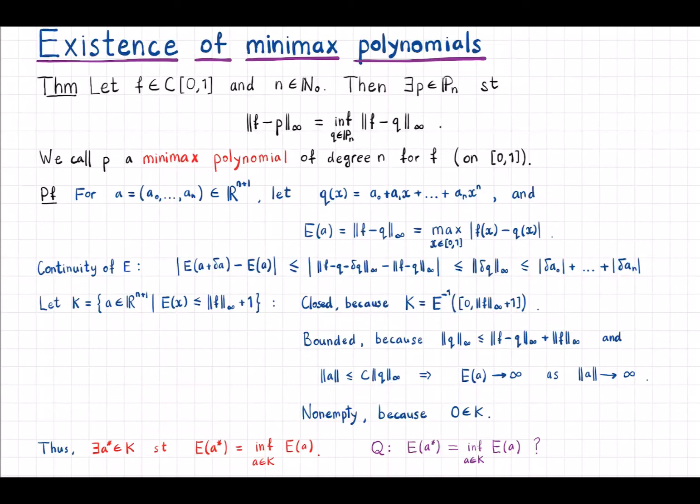In this video we want to prove that if you fix a continuous function on a closed interval and fix a polynomial degree, then there exists a polynomial that realizes the minimum possible error in the uniform norm.